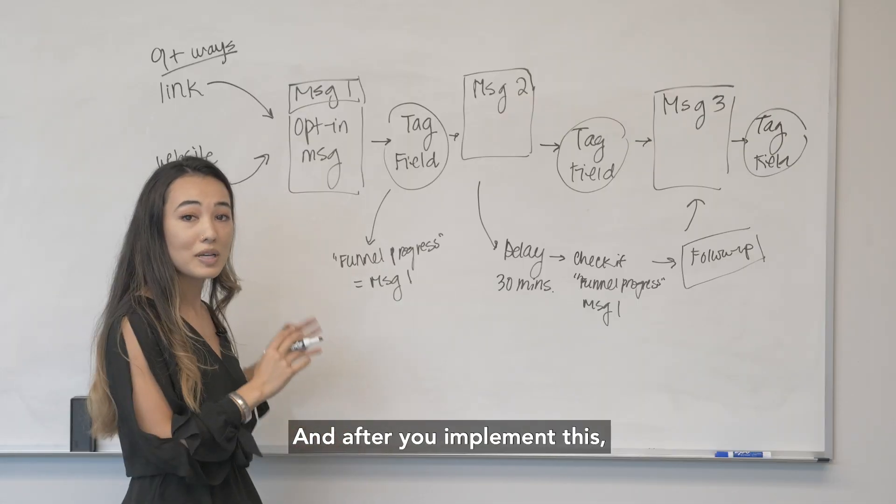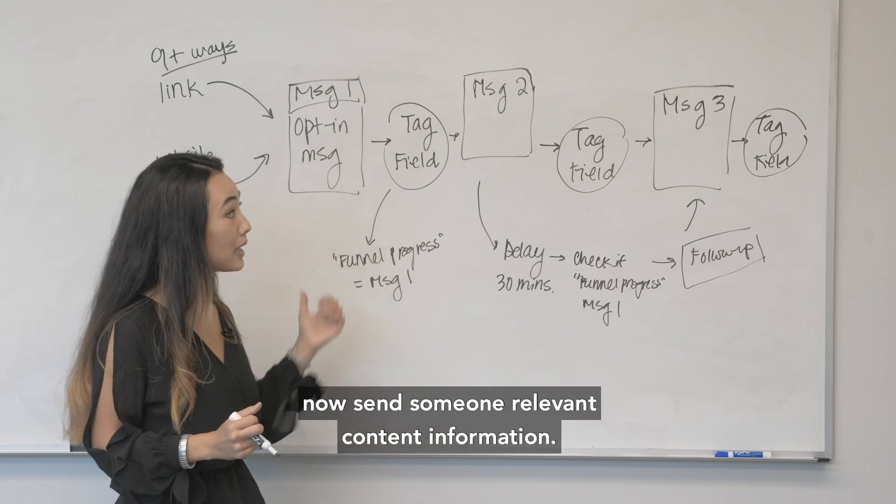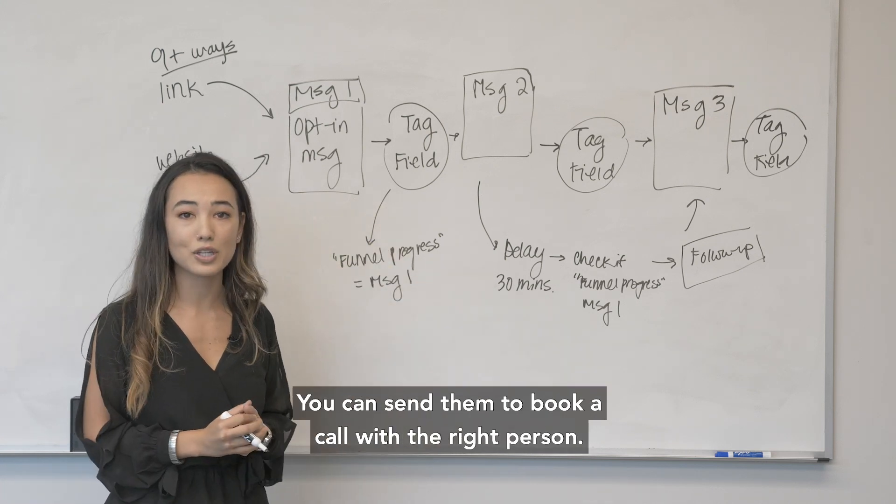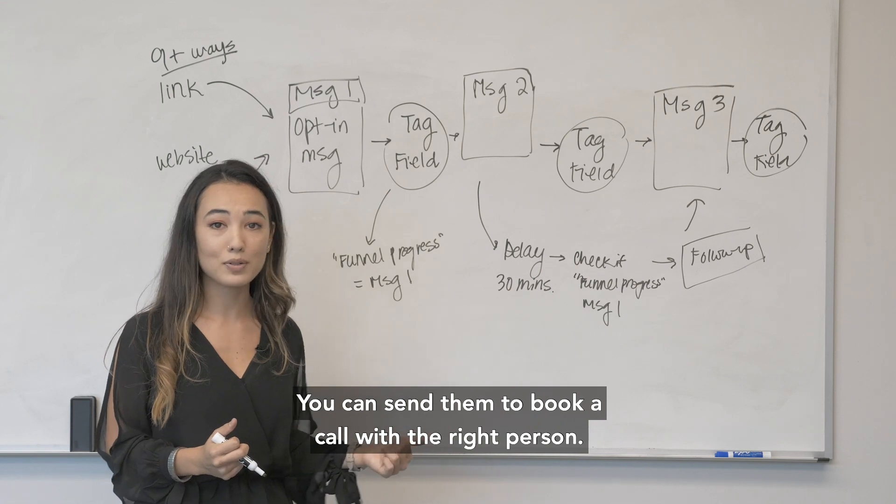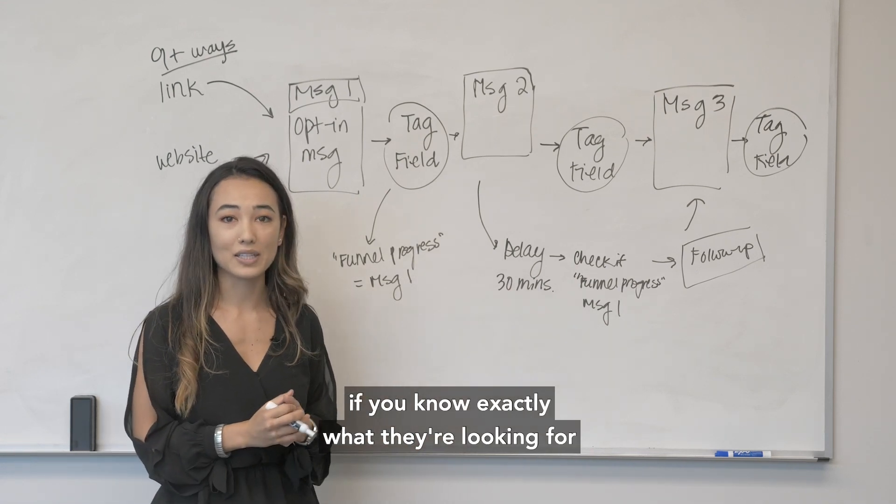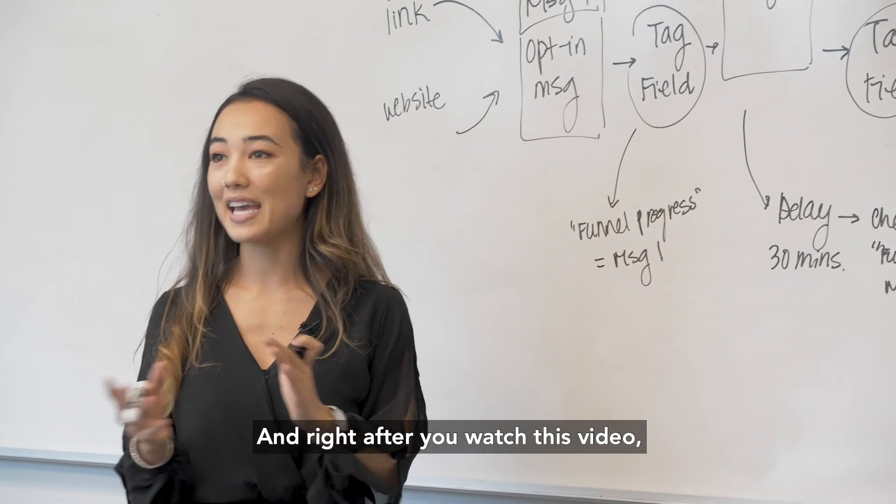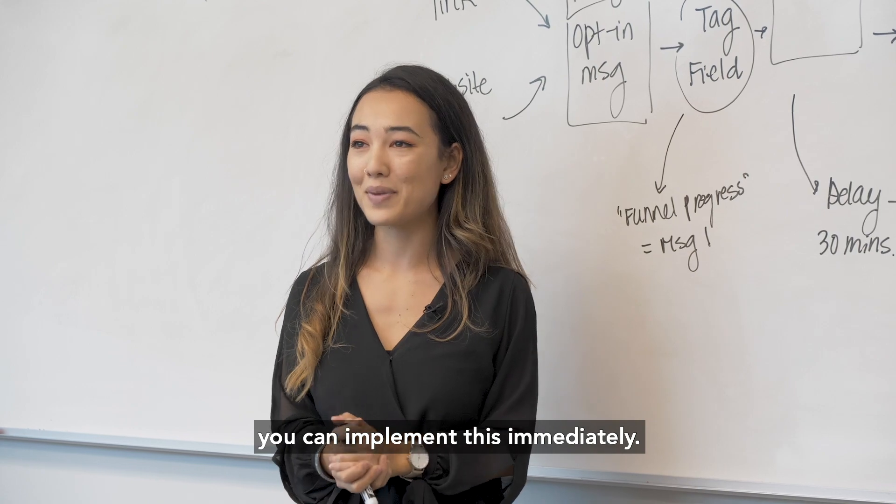And after you implement this, like I mentioned there's so much more that you can do with your bot to where you can now send someone relevant content information, you can send them to book a call with the right person, you can even send them directly to a purchase if you know exactly what they're looking for based on the questions that you ask. So I hope this is helpful for you guys and right after you watch this video you can implement this immediately.